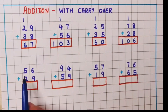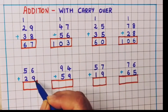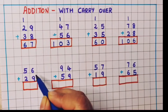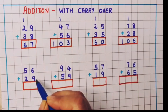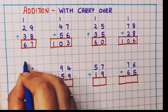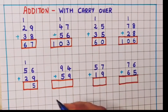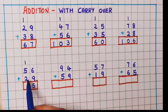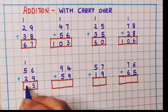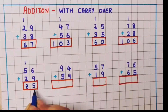Now let's see the next problem: 56 plus 29. First we will do the addition of the ones digit numbers — 6 plus 9 gives the answer 15. So 1 I will write in the tens place and 5 I will write in the ones place. Now 5 plus 1 is 6, and 6 plus 2 is 8. So the answer is 85.